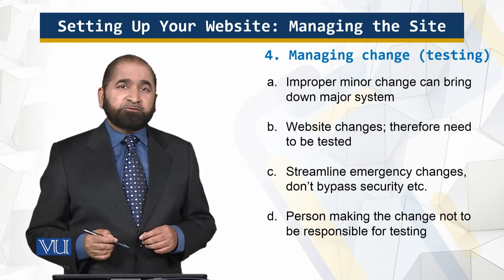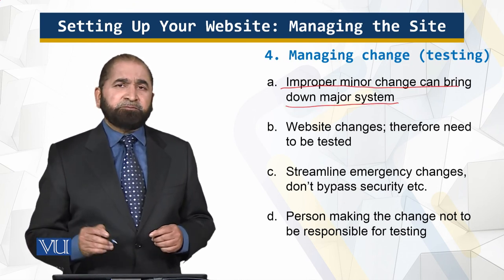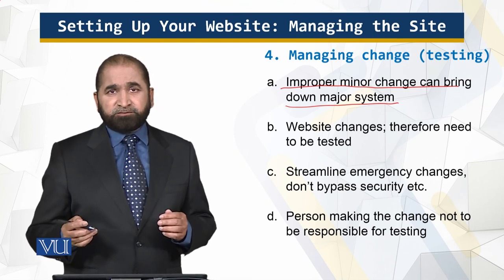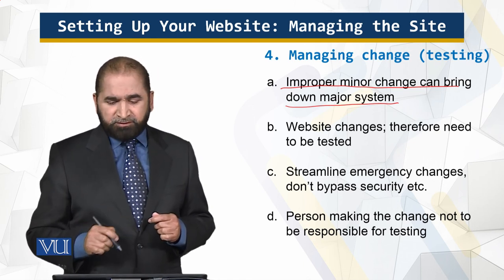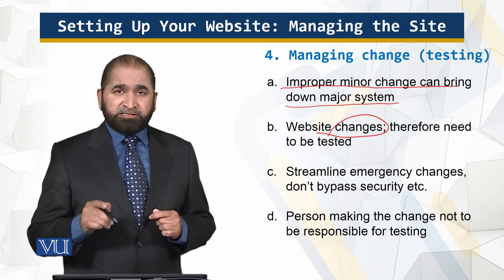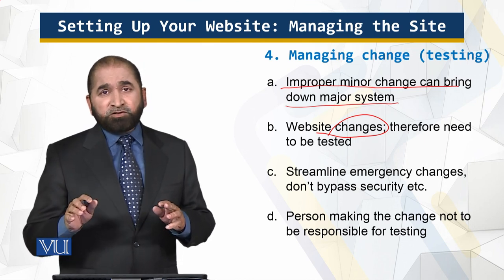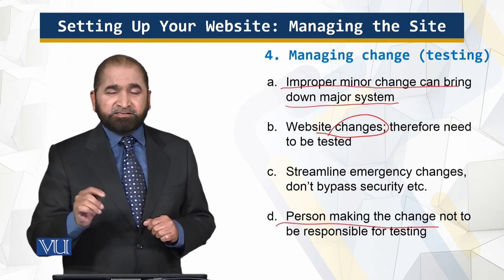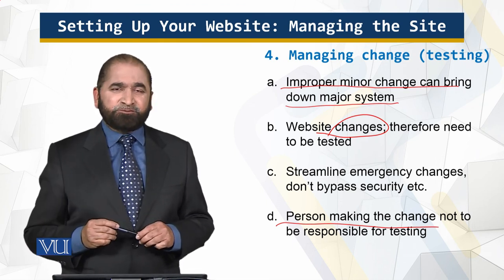When you make a change, improper minor changes can bring down a major system. There are many stories of systems down for hours or days because a change was made without testing. Changes are always happening, and in case of emergency, streamline the changes carefully, because loopholes are left to be exploited later. Finally, the person who makes the change should not be the person who tests the changes.